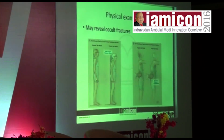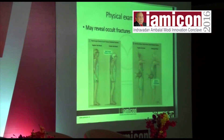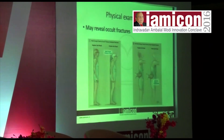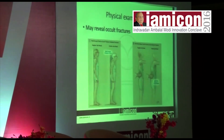Physical examination may reveal occult fractures. The easiest physical examination is to just stand against the wall. If the occiput distance is more than 4 cm between the wall and your head, then your vertebral height has decreased. That is one of the most common signs of osteoporosis.